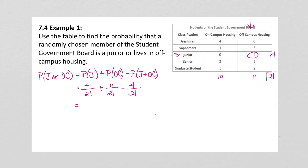So, the probability that we select a junior or a student living in off-campus housing is 11 out of 21, or as a decimal, 0.523810.